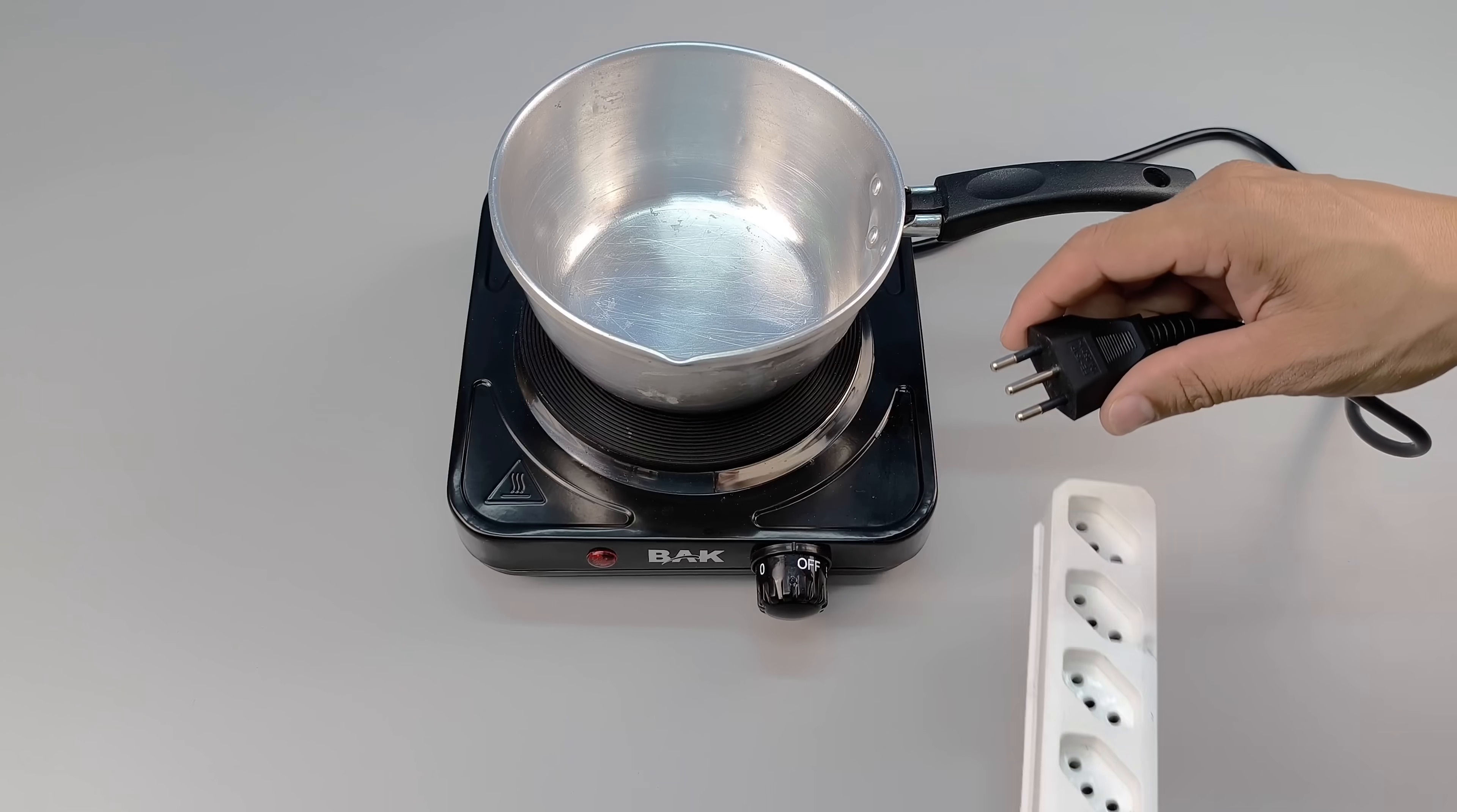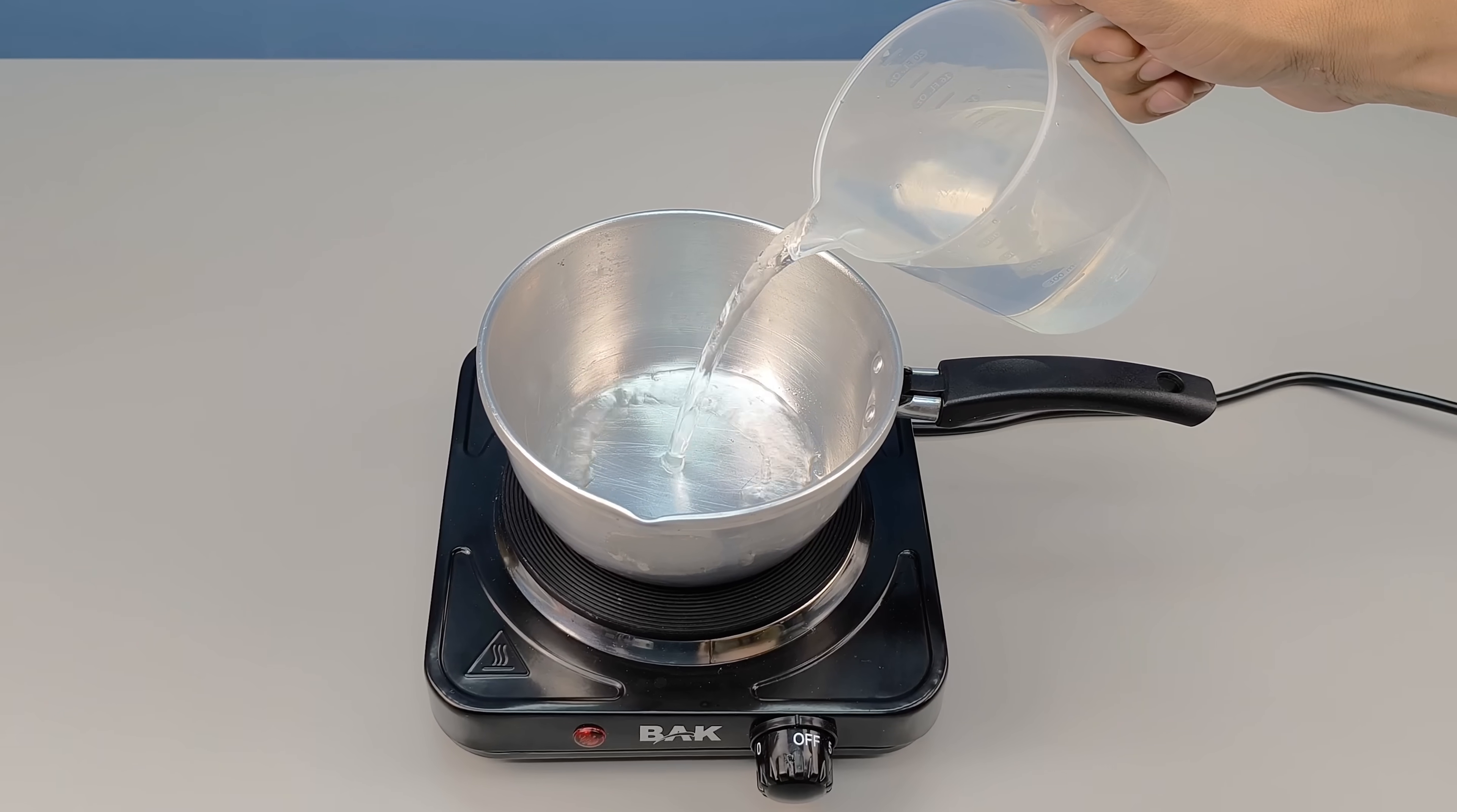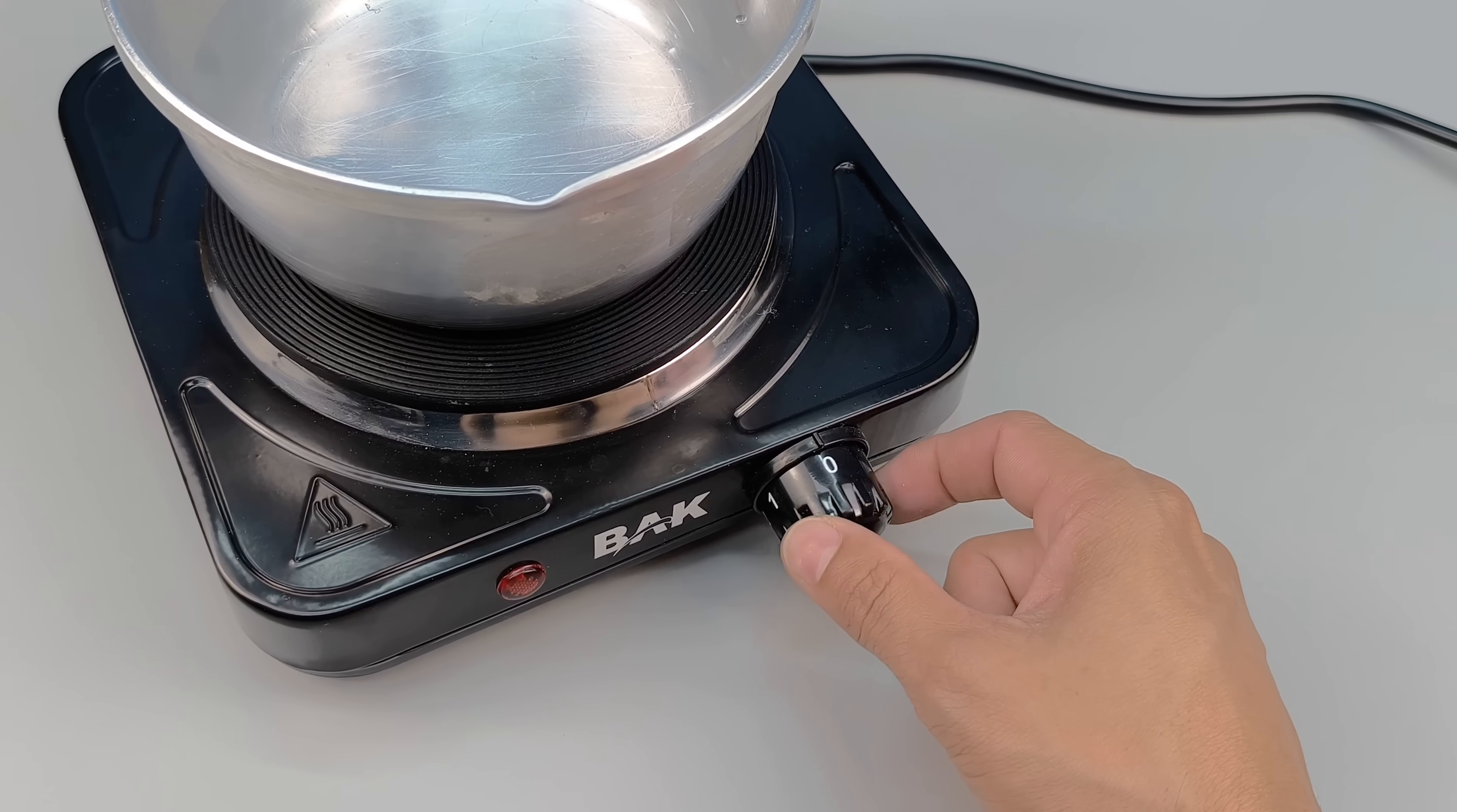You'll also need a sturdy container, preferably aluminum. Separate approximately 500 milliliters of filtered water at room temperature and bring to a slow boil in a clean pan using an electric or gas stove, preferably over high heat to speed up the boiling process.